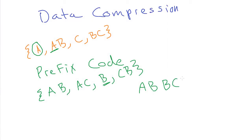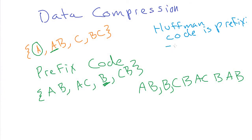This code here is a prefix code — none of the symbols are the prefix of another. Here we have B by itself, but none of the other codes start with B, so it's okay. I can just put all the symbols together and it's not ambiguous where the breaks are. As we scan through, we see AB is a symbol, B by itself is a symbol, and we know B can't be the start of anything else. And the reason this is important is because the Huffman code is a prefix code.